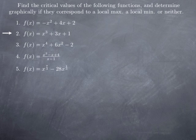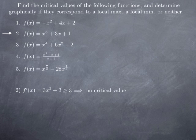For f(x) = x³+3x+1, it is a polynomial, so the derivative is defined everywhere and the only critical values are the zeros of the derivative. The derivative is 3x²+3, which is at least 3, since it equals 3 plus something positive. Therefore it is never 0, and as a consequence there is no critical value, and therefore no local extrema, because local extrema can only occur at critical values.